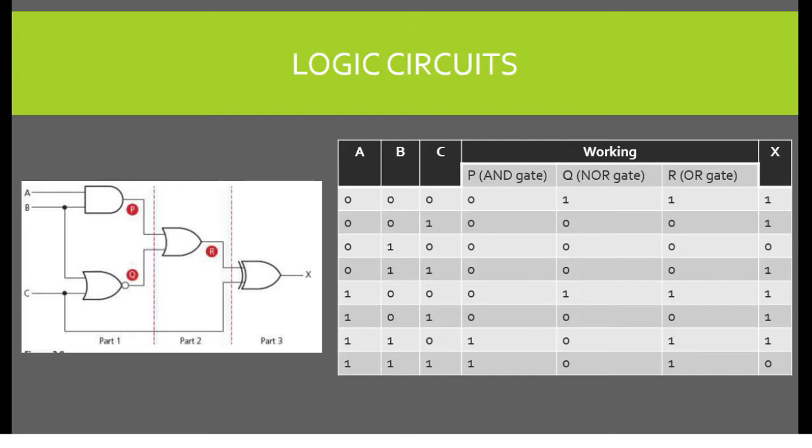Gate Q is a NOR gate with the inputs B and C. The small circle at the end and the structure can be used to identify as a NOR gate. Since it is a NOR gate, both inputs have to be 0 in order to get an output of 1. It can be seen that the first and fifth row gives an output of 1.